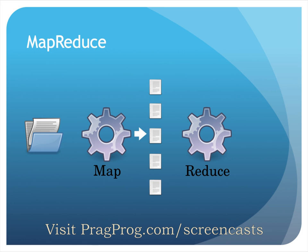The mapper's output is then passed to the Reduce phase. The reducer's job is to process the data from the mapper into something usable. Every single value from the mapper is passed into the reduce function, and the reducer will create new output values that are saved to HDFS.